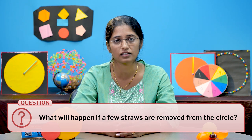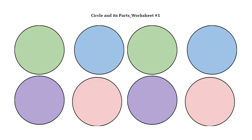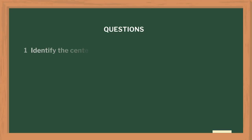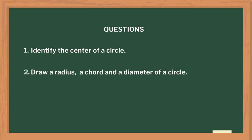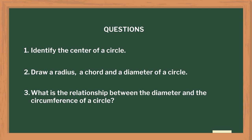After this activity, I asked the students what will happen if a few straws are removed from the circle. Finally, I gave a worksheet to assess their understanding of the concepts. I encouraged my students to use proper cutouts of the circle for solving this. My students really enjoyed this activity. Pose questions like identification of the center of a circle, drawing the radius, chord and diameter of circle, and what is the relationship between diameter and circumference.